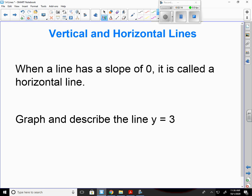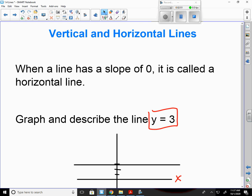You'll know that it's a horizontal line because there's no x in our equation. This is just graph and describe the line y equals 3. And so if we were doing that on a coordinate plane, I would just have a horizontal line at the point y equals 3.